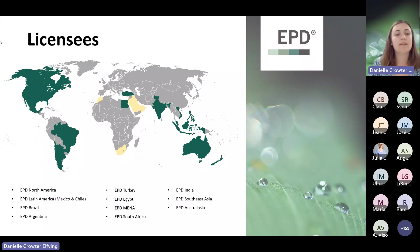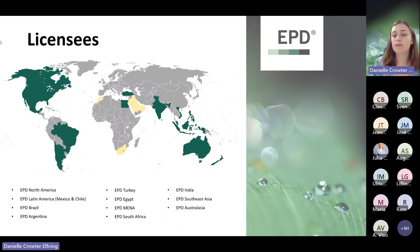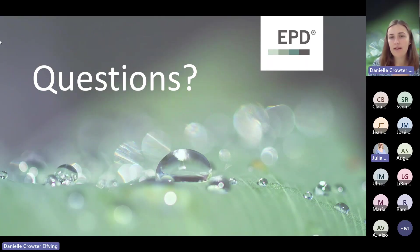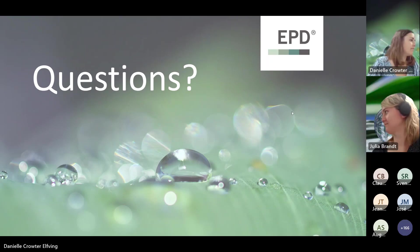Finally, I would just like to present the licensees. If you are in any region marked green on this map, then you are part of a regional hub and you can contact any of these. You can find the contact details for all of these on our website. And that was just about it for me — I will stop here in case anyone has any questions.